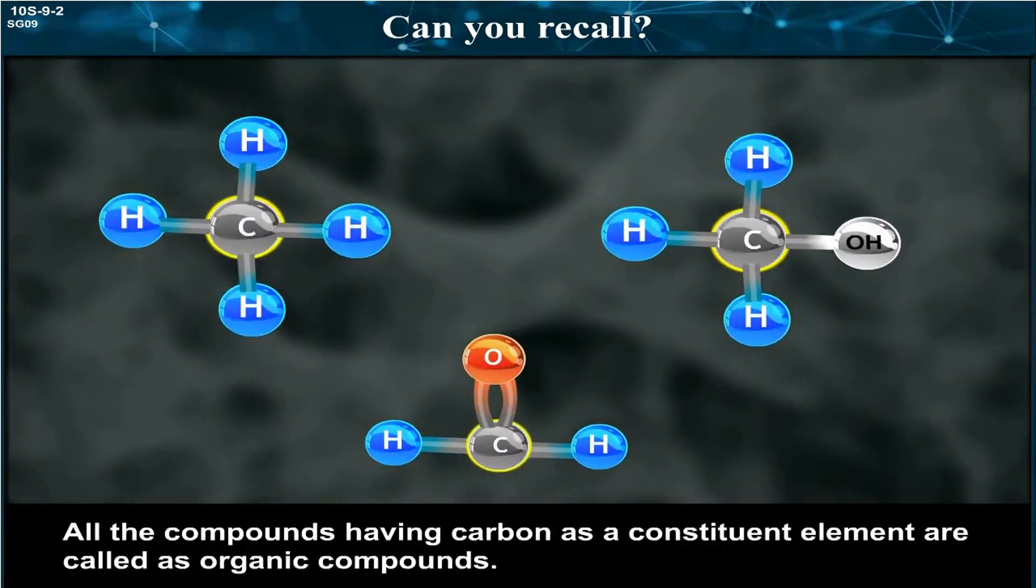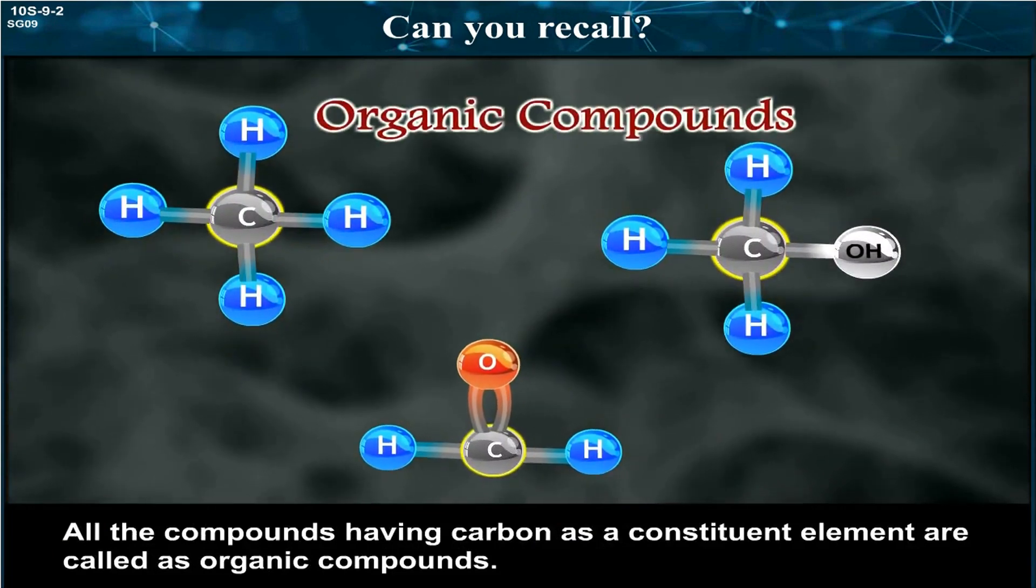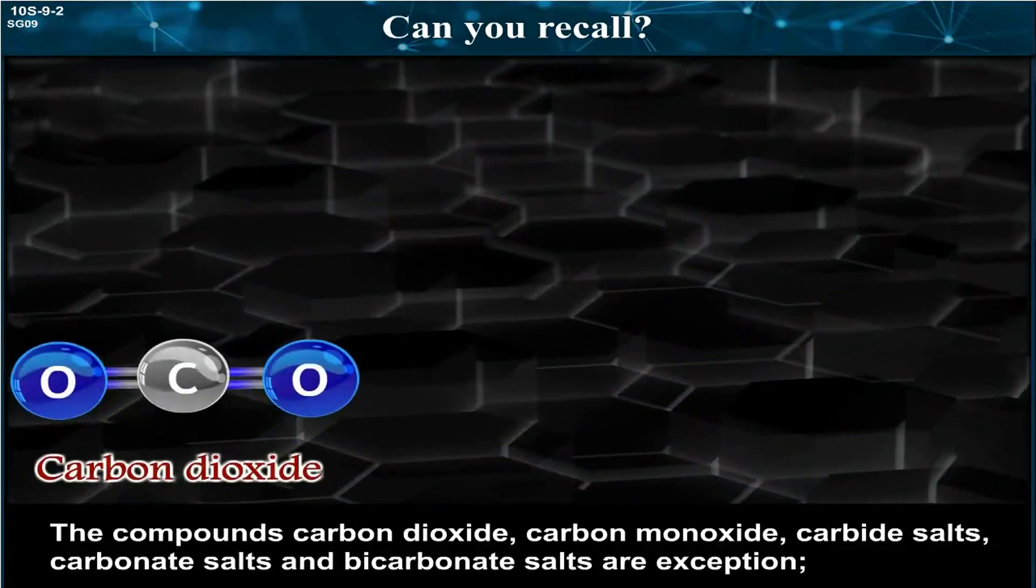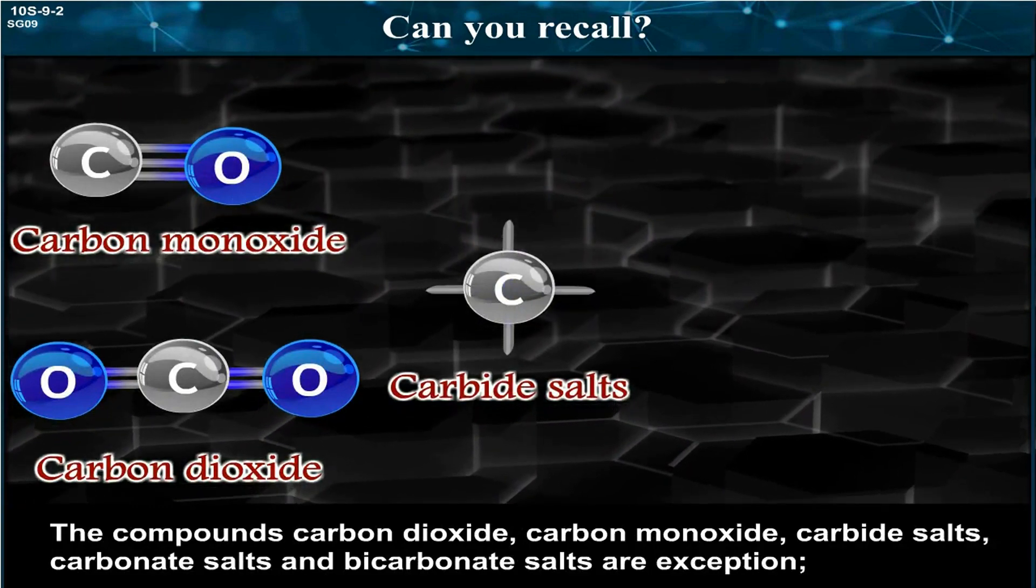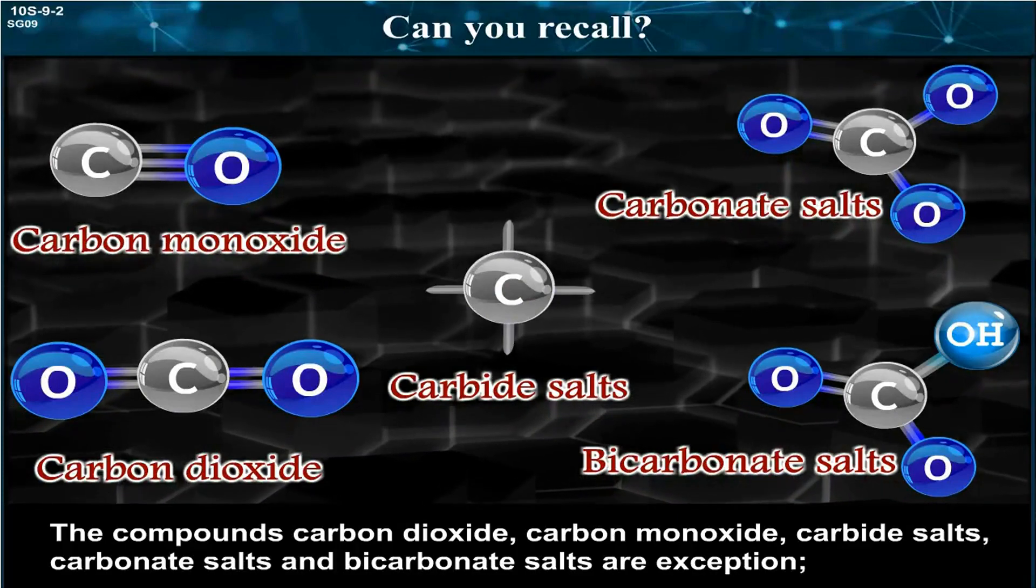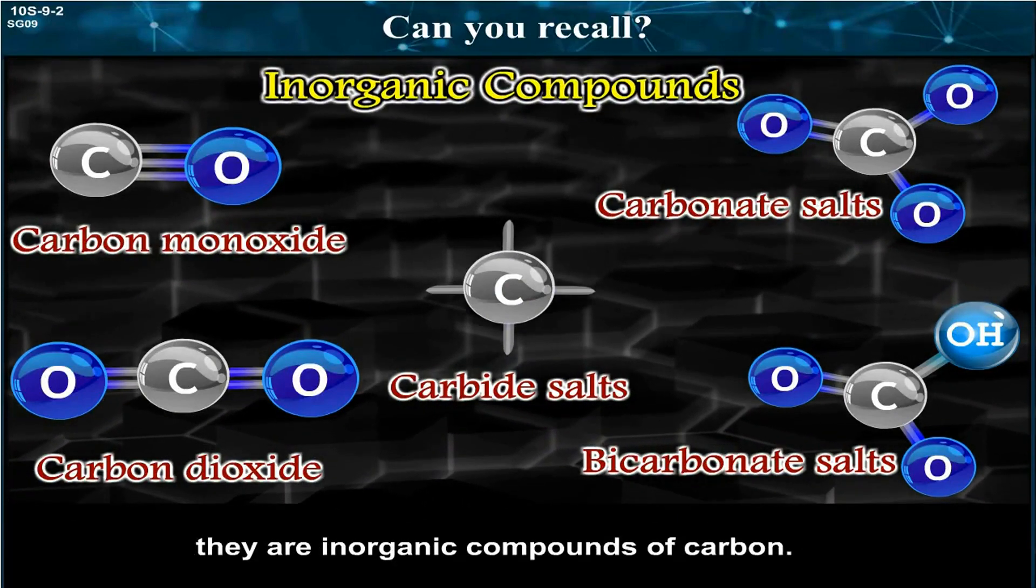All the compounds having carbon as a constituent element are called organic compounds. The compounds carbon dioxide, carbon monoxide, carbide salts, carbonate salts, and bicarbonate salts are exceptions. They are inorganic compounds of carbon.